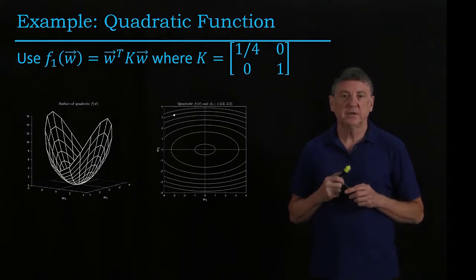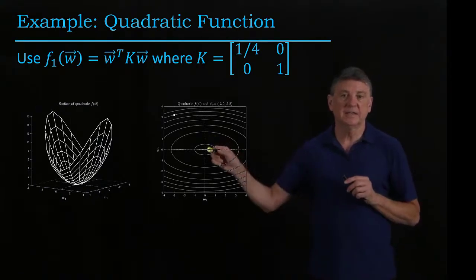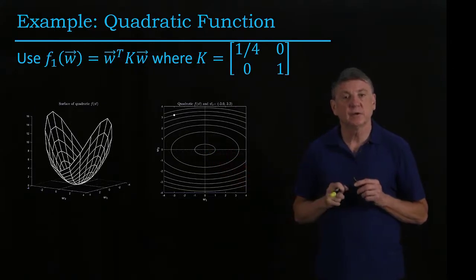And when we take the contours, what we see is that instead of being circles, these are now ellipses.